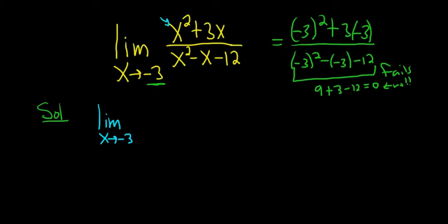I think in the numerator, we can pull out an x. So x parentheses looks like x plus 3. And then on the bottom, this should factor. So it should look something like this.